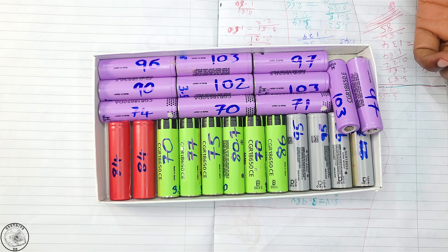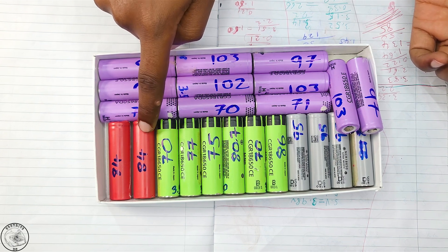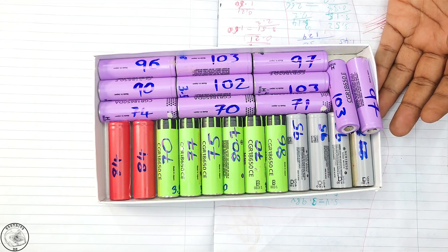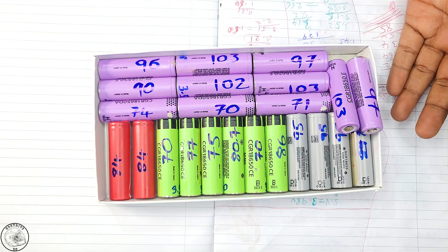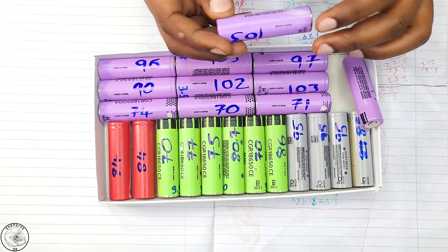Initially, I set a threshold of 100 milliohms. However, given the remarkably low yield rate, I included 4 cells rated slightly above this limit at 103 milliohms.